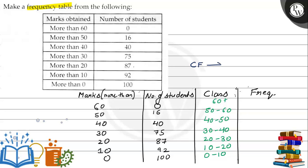Since we are converting cumulative frequency to frequency, we will have to do subtraction. So below you can see 100 minus 92 will give us 8.